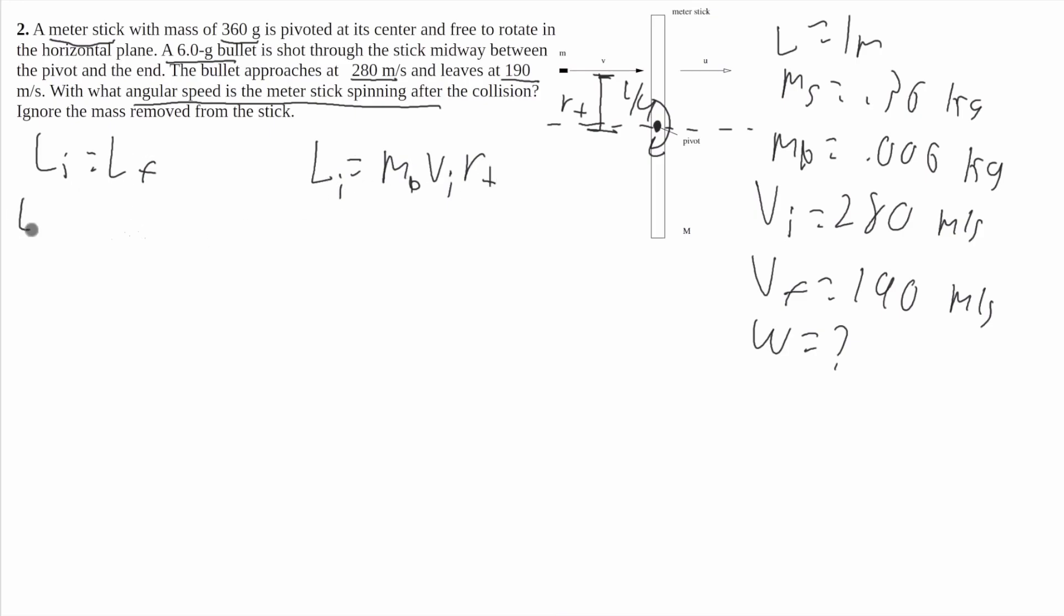But for angular momentum final, it's going to be equal to i omega, which is the angular momentum of the stick plus the angular momentum of the bullet. So it'll be mb, v final, because it's after, and then it'll be r perpendicular, because that doesn't change. Now i will usually be given to you in some chart or maybe in the problem. There is a derivation for it, but I'm not going to cover it in this video. So i is going to be equal to 1/12 ml squared. I'll just leave it as i until the very end.